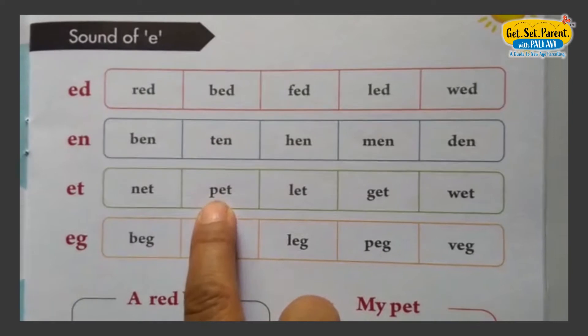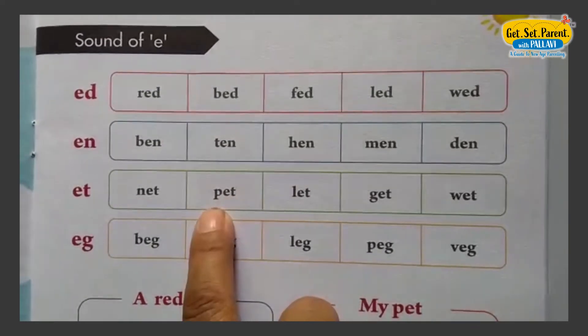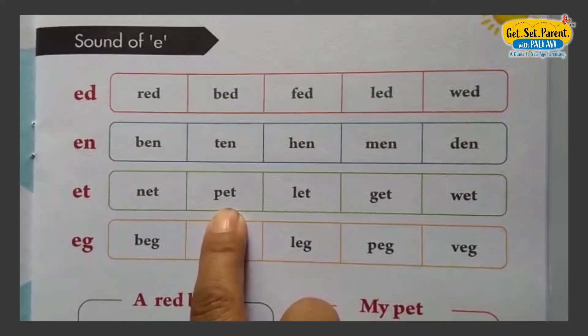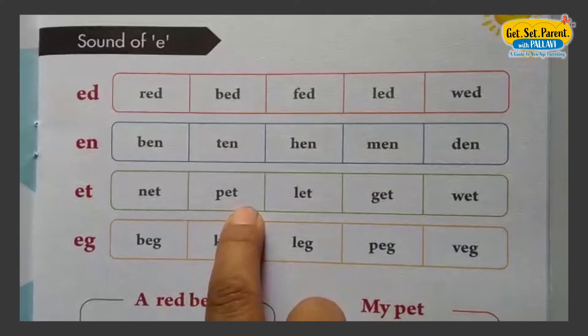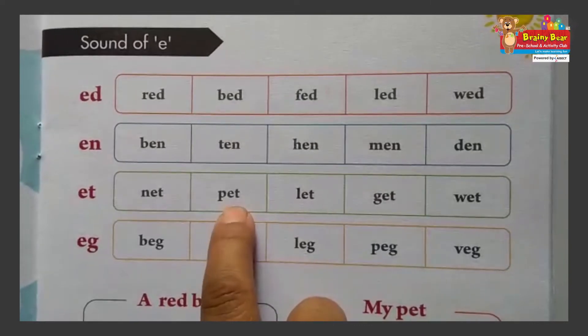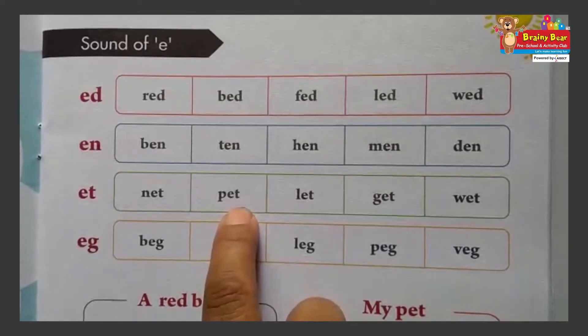Next: P, E, T. Phonic of P: P. Phonic of E: E. Phonic of T: T. P-E-T. PET.